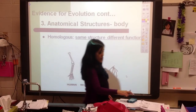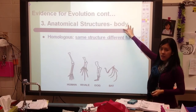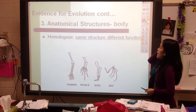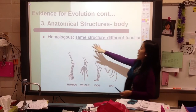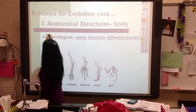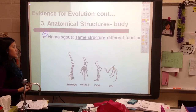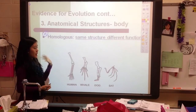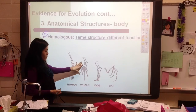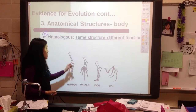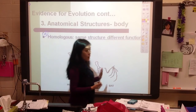The last type of evidence is anatomical structures — body or physical structures. There are three types. The first is homologous structures: same structure, different function. For example, a human's arm, a whale's fin, and a dog's leg — the way the bones are set up is really similar, but they all do different things.